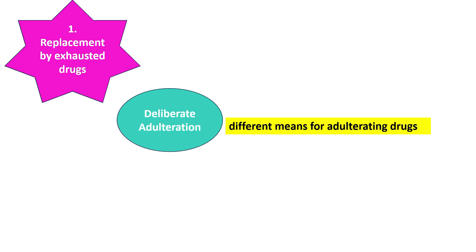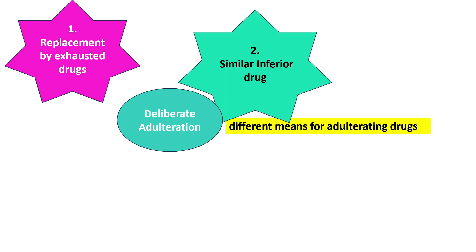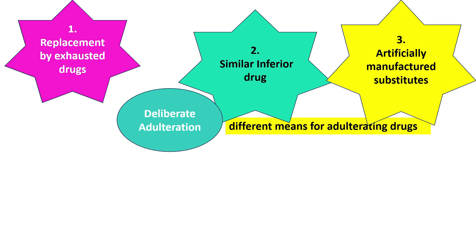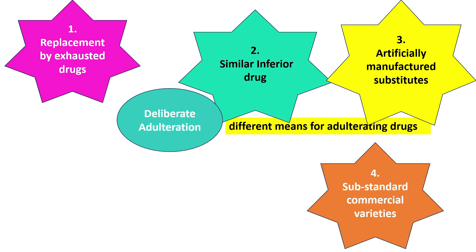The six types are: replacement of exhausted drug (the active principle or volatile oil is removed); similar inferior drug (e.g., Digitalis lanata mixed with Digitalis purpurea, or Datura stramonium mixed with Datura metal — low quality mixed in as they look similar); artificially manufactured substituents (e.g., honey adulterated with jaggery or artificial sugars); and substandard commercial variety (a substandard, low-quality variety mixed with the genuine drug).